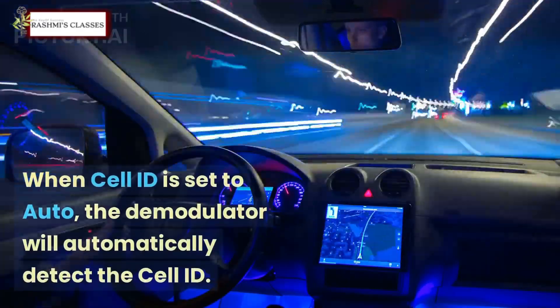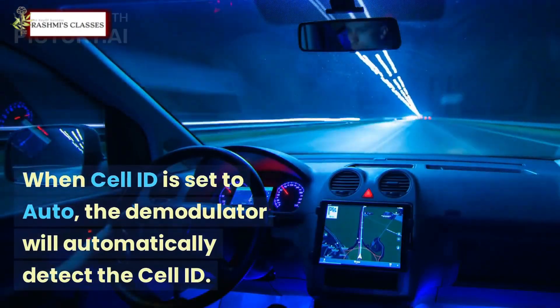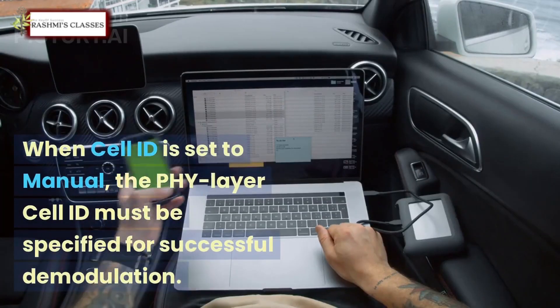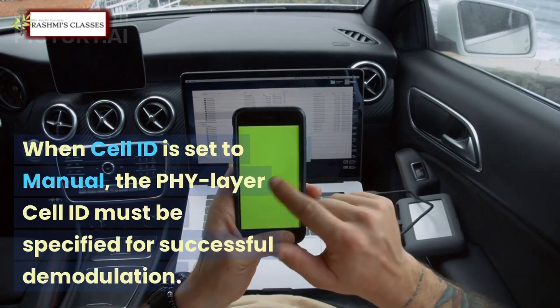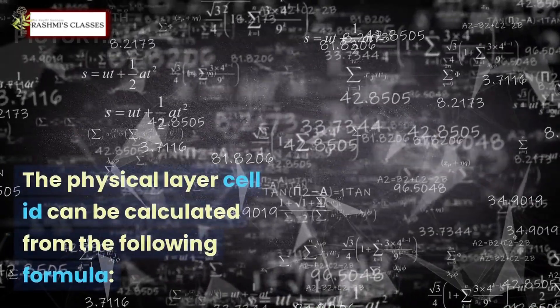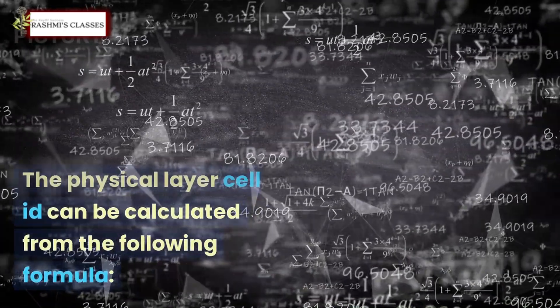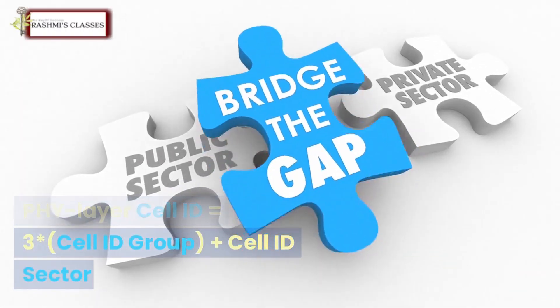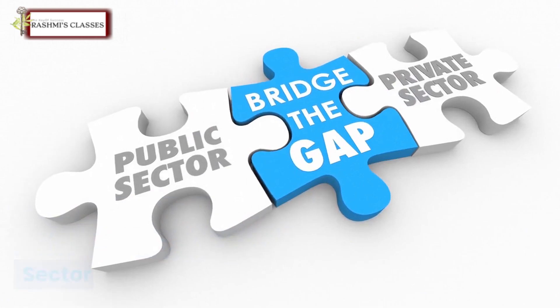When cell ID is set to auto, the demodulator will automatically detect the cell ID. When cell ID is set to manual, the physical layer cell ID must be specified for successful demodulation. The physical layer cell ID can be calculated from the following formula: Physical layer cell ID = 3*cell ID group + cell ID sector.